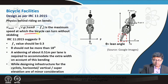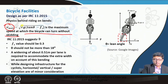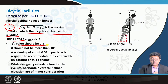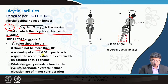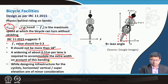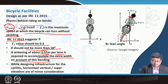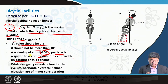The maximum speed at which a bicycle can turn without skidding is: v_max = √(r·g·(tanθ − fs)). IRC 11 suggests a coefficient of friction fs = 0.3 and θ should not exceed 18 degrees. A widening of about 0.51 meter per lane is required at bends to accommodate the extra width due to this leaning. Super elevation is not necessary for bicycle lanes, unlike for motorized vehicles.